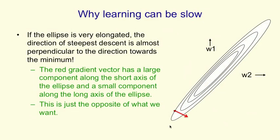Using this picture of the error surface, we can also understand the conditions that will make learning very slow. If that ellipse is very elongated, which is going to happen if the lines that correspond to two training cases are almost parallel, then when we look at the gradient, it's going to have a nasty property.